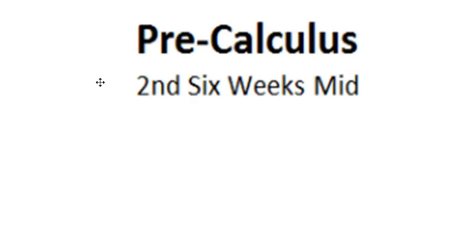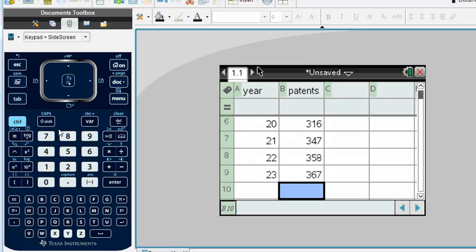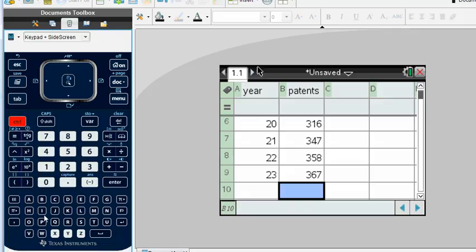We had a pre-calculated second six-weeks midterm last week, and this video lesson is a review of that test. For the function f(x) = x⁴ - 7x² + 6x, what are the approximate coordinates of one of the local minimums? Let's go to our calculator and get another page.